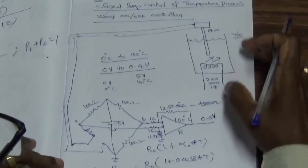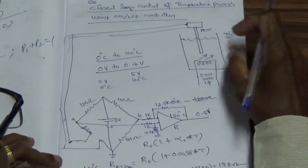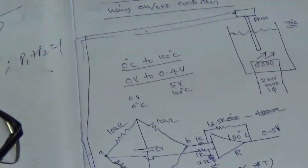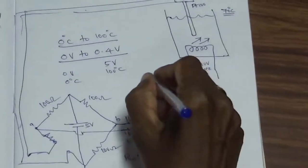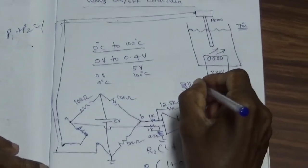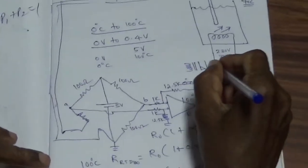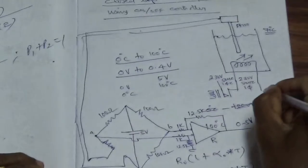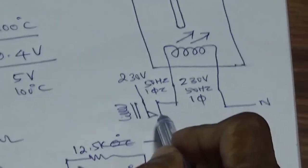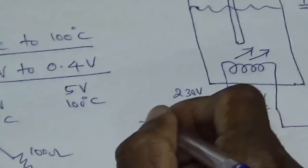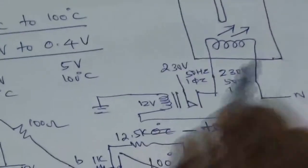Now we want to use this signal to control the heater using an on-off controller. For that we will use a relay to turn on the power supply. The relay is made up of a coil, and it will be turned on and off. It will supply 230 volt 50 hertz single-phase power supply to the heater. A 12 volt relay is used — one end is grounded and the other end needs 12 volts.